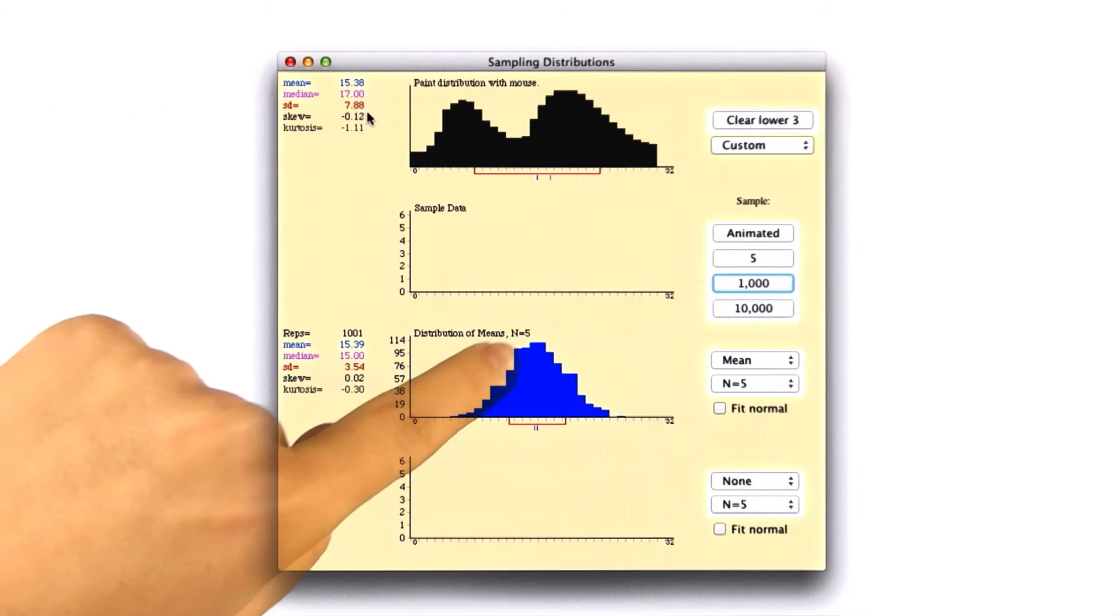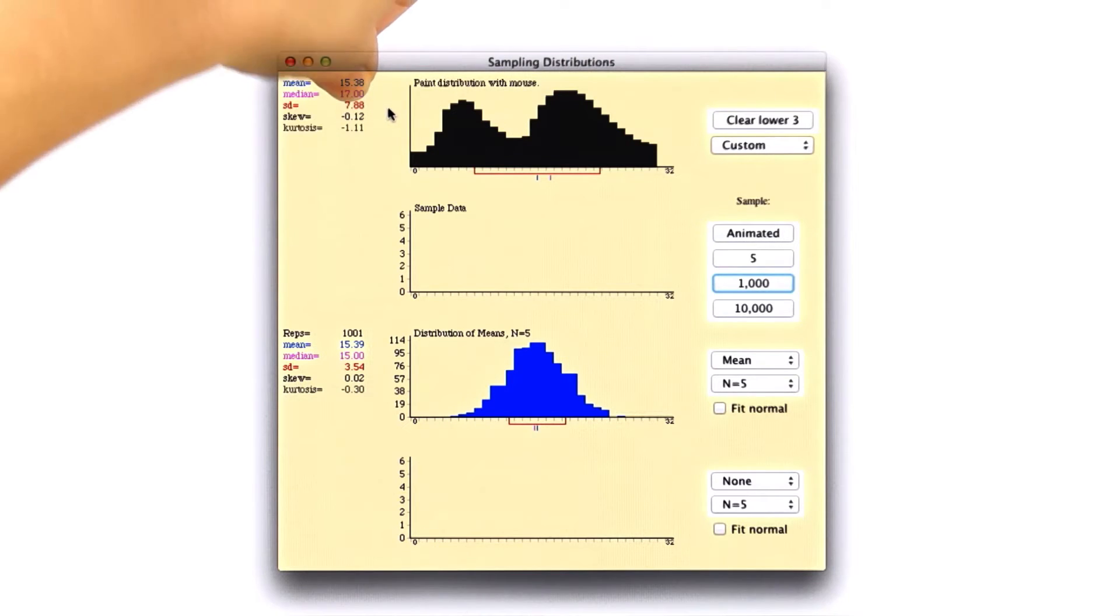So the standard deviation of this distribution should be 7.88, the population standard deviation, divided by the square root of 5. Try it out. Do you get 3.54? You probably get something pretty close.